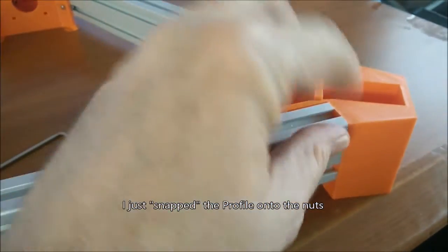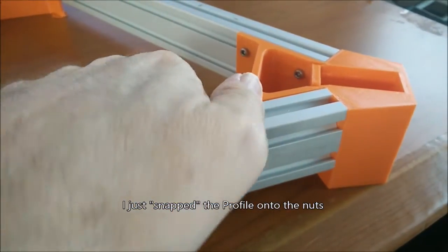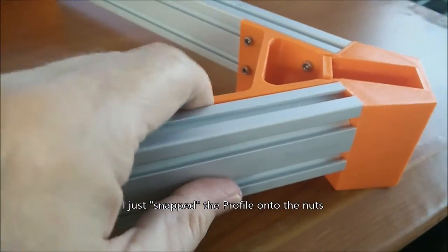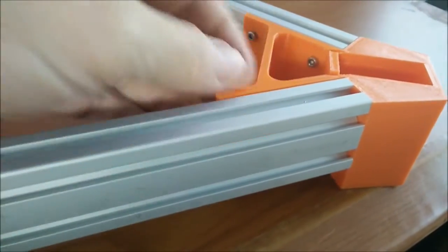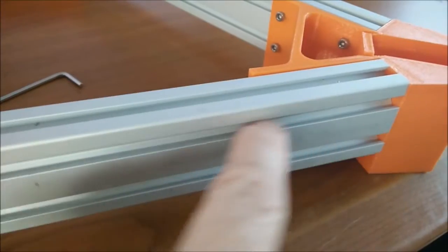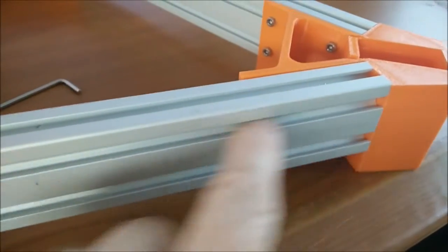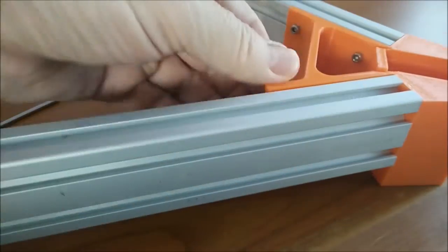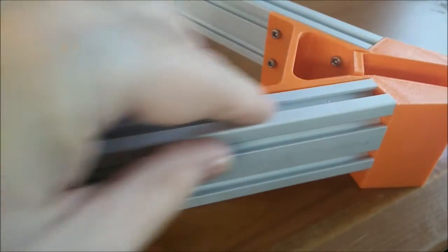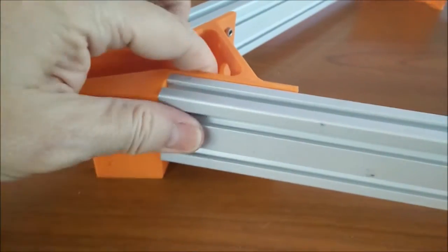Alright, so the profile is added but it's still loose. The T-slot nuts are sitting inside the screw horizontally but there is no connection yet with the profile.